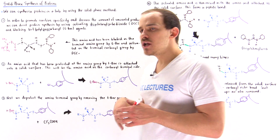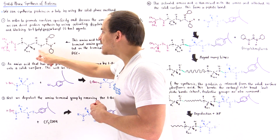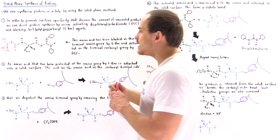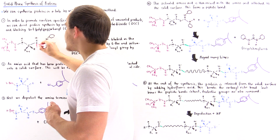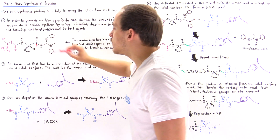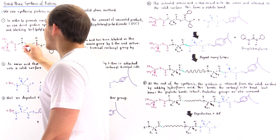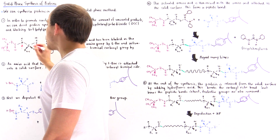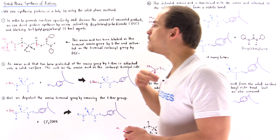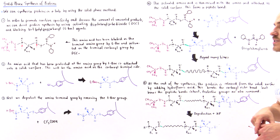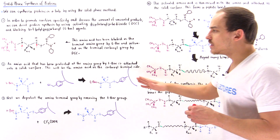In step number one, we prepare the amino acids. By reacting an amino acid with DCC, we form an attachment that activates the carboxyl carbon. By reacting that same amino acid with TBOC, we add a component onto the nitrogen that blocks and deactivates it. This means the nitrogen no longer forms peptide bonds, while the carbon becomes much more likely to form peptide bonds — which will become important in the next steps.